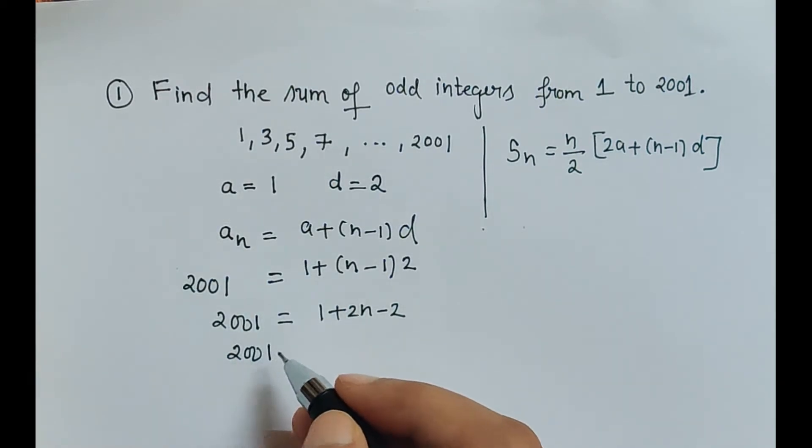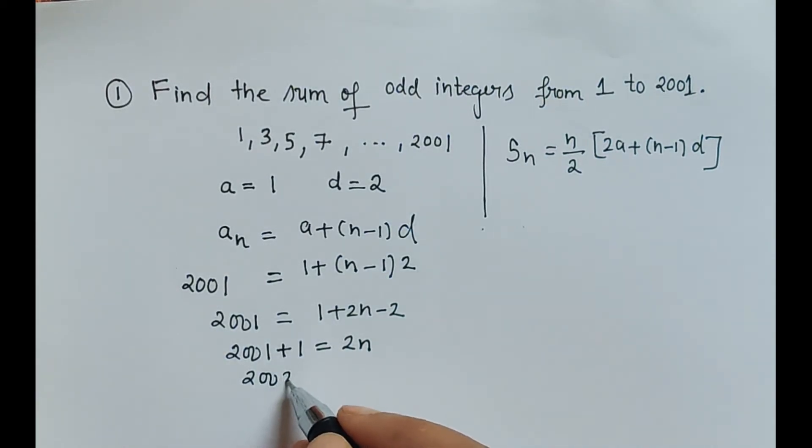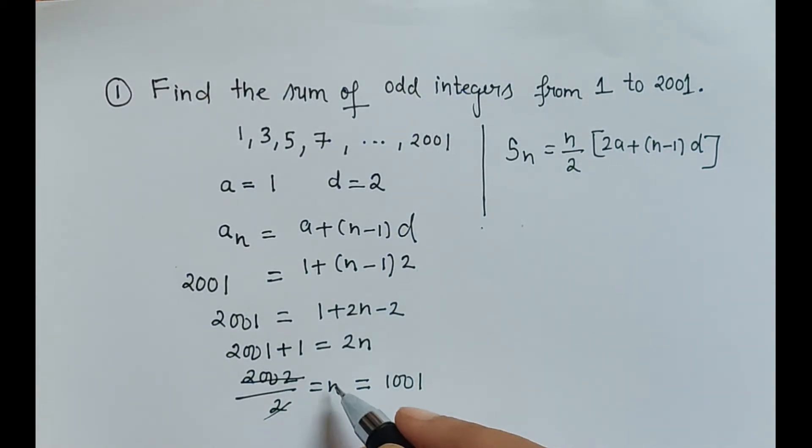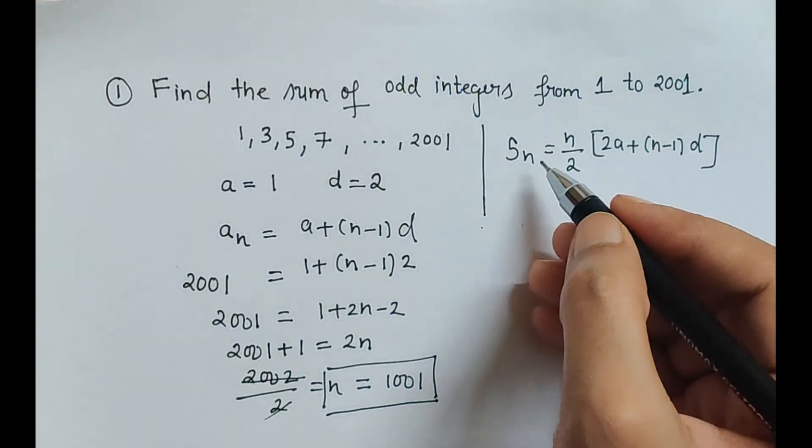So 2001, here 1 minus 2 is minus 1, and then minus 1 is shifted to left hand side, it will be plus 1, and only 2n is left here. Now this is 2002, and when we bring this 2 to the denominator, we are left with value of n as 1001.